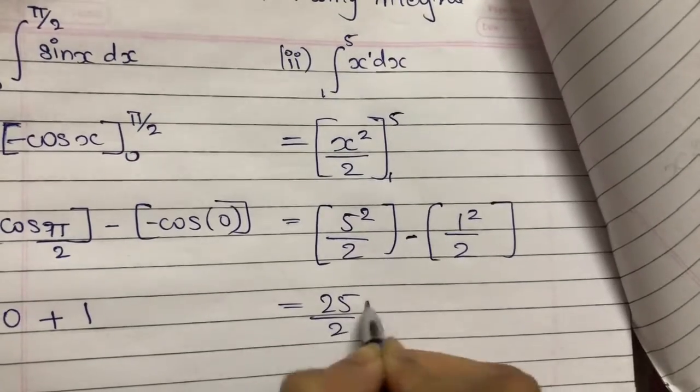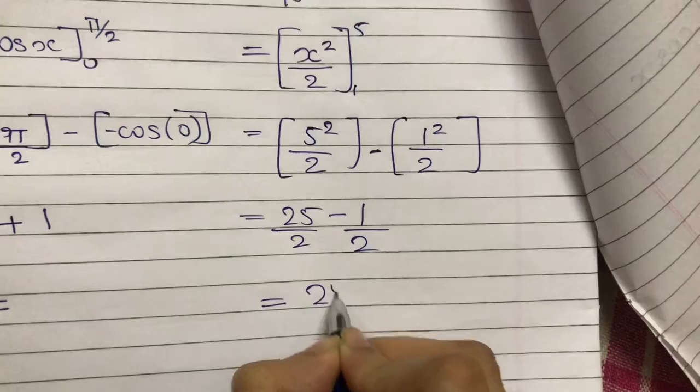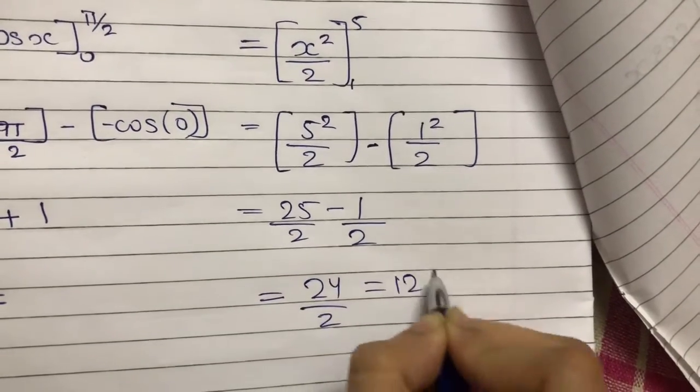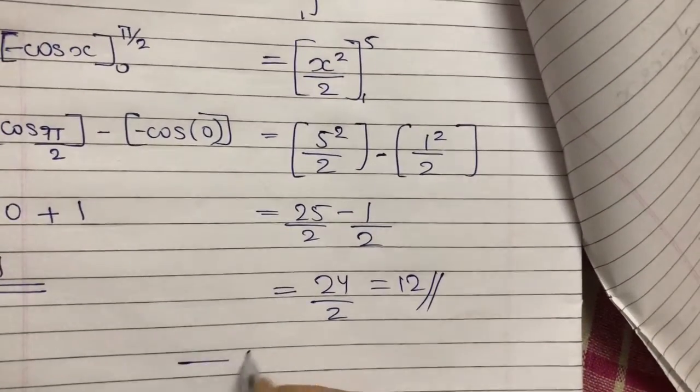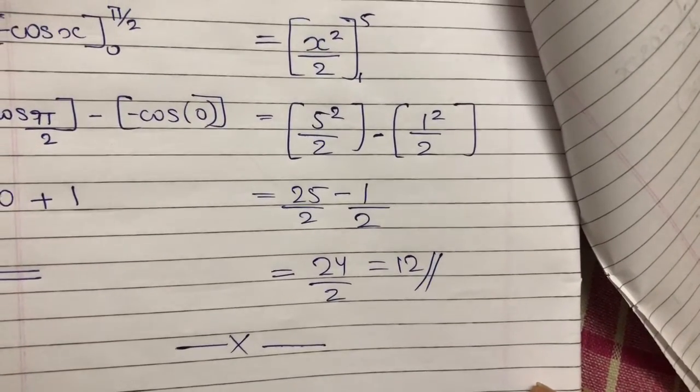Pi squared is 25 upon 2, 1 upon 2. 25 minus 1 is 24 upon 2, so it is 12. You will complete all the numericals of chapter 2, unsolved numericals.